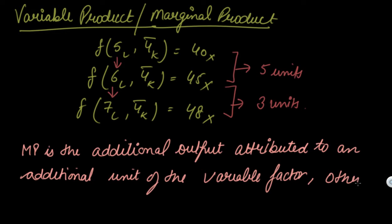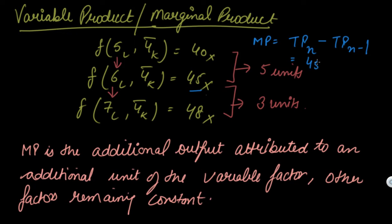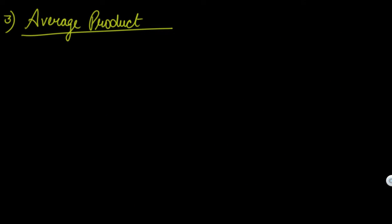By using one additional unit of your variable factor — with all other factors remaining constant — what is the change in your total product? That additional output is your marginal product. The formula to calculate marginal product is: TP of n units minus TP of n minus 1 units. For example, the nth unit gives 45 and n minus 1 gives 40, so the marginal product is 5. This is similar to how you calculate marginal utility in the consumer unit.